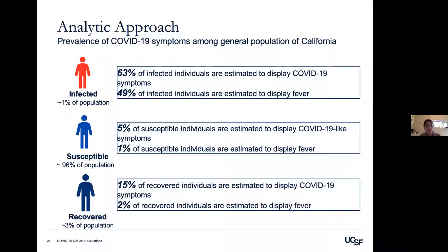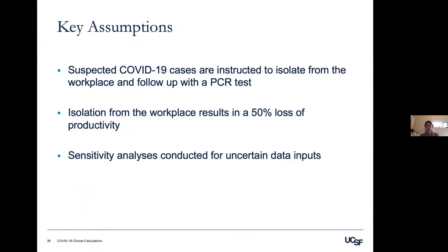Furthermore, COVID-19 symptoms are indistinguishable from other respiratory illnesses and can occur across each infection state. Key model assumptions: individuals flagged as suspected COVID-19 cases are instructed to isolate and follow up with a PCR test, so return to work in each scenario is contingent on a negative PCR result. We also assume that isolation from the workplace results in a 50% loss of productivity, and we conducted sensitivity analyses on this and other uncertain data inputs.